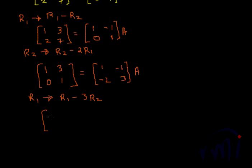So what will we get? 1 minus 3 times 0 is 1. 3 minus 3 times 1 is 0, and the R2 remains the same. So we got an identity matrix. So here this indicates that we stop the operations here. Then we have to repeat it on the other side.